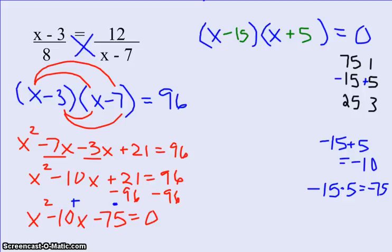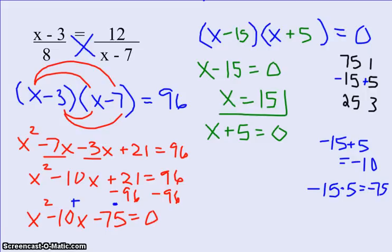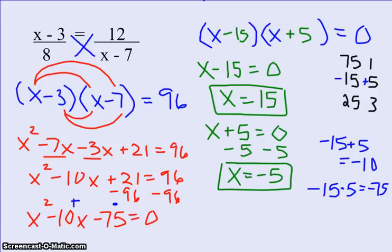But I'm not quite done yet, because I'm still trying to solve for x. I have that equals 0 to take care of. So I split up my problem: x minus 15 equals 0, and x plus 5 equals 0. When I add 15 to both sides, I get x equals 15. And when I subtract 5 from both sides, I get x equals negative 5. So this problem has two answers.